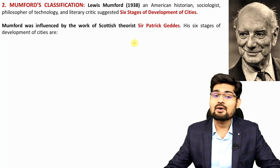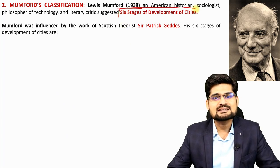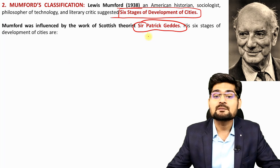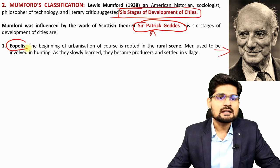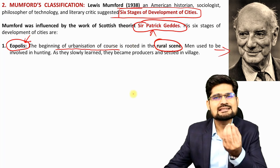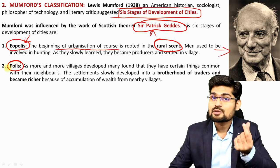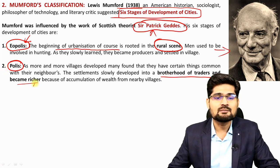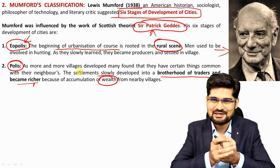The Mumford classification is very important. Louis Mumford, 1938, was an American historian and sociologist influenced by Patrick Geddes's work of 1915. Mumford also talks about six stages of development of cities. The first is Eopolis — the beginning of urbanization, rooted in the rural scene, the inception stage. Then it becomes a Polis — the word for town from Roman origins — where the brotherhood of traders becomes richer and accumulation of wealth happens, similar to Rostow's preconditions for takeoff.